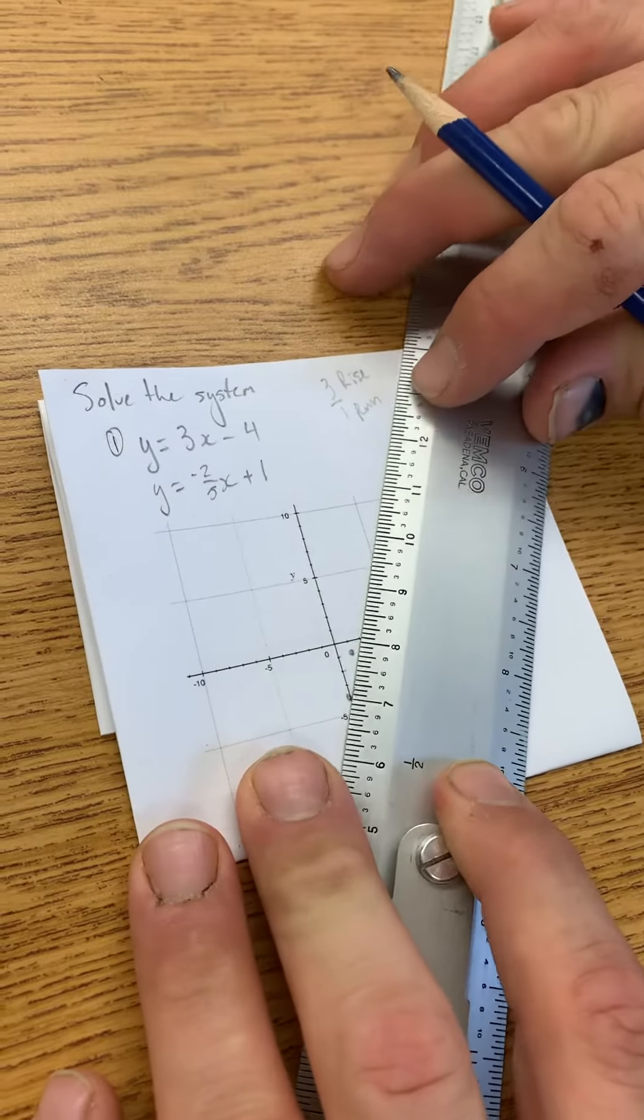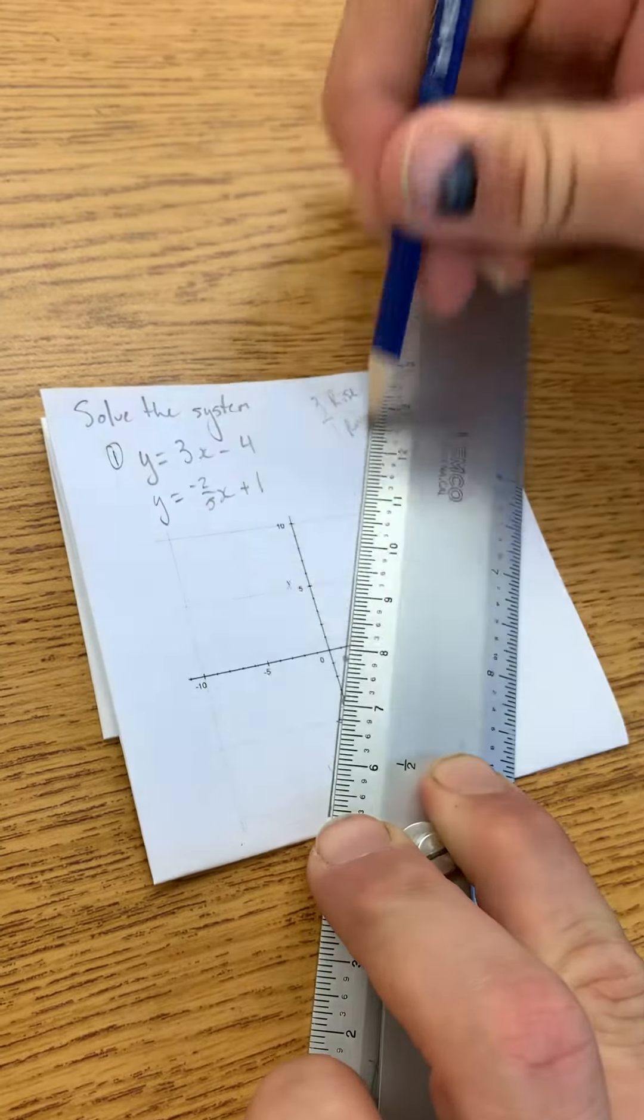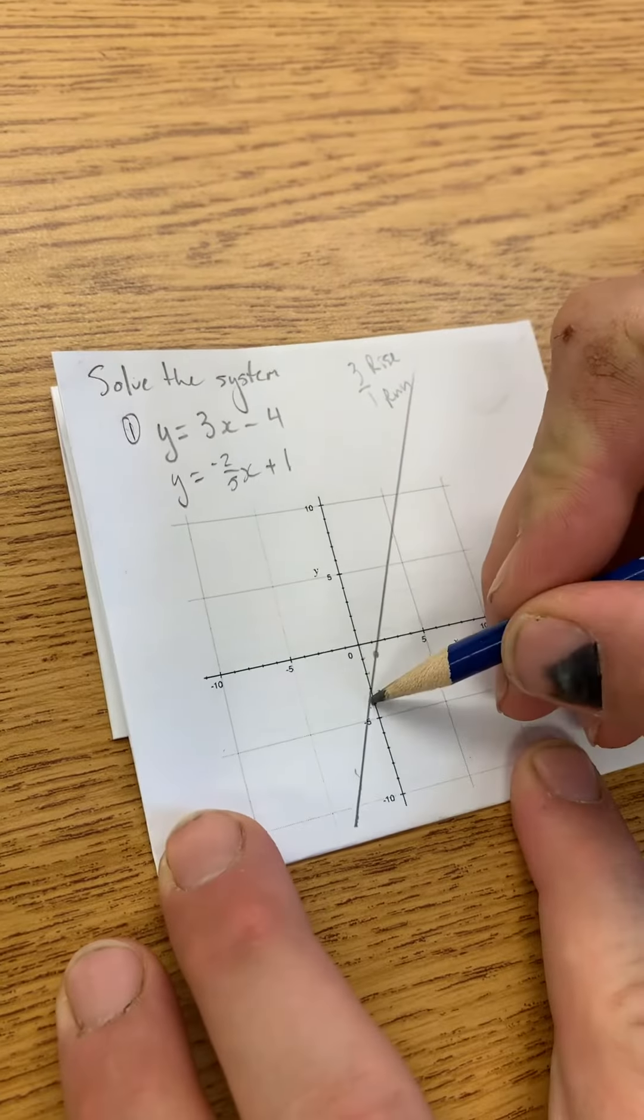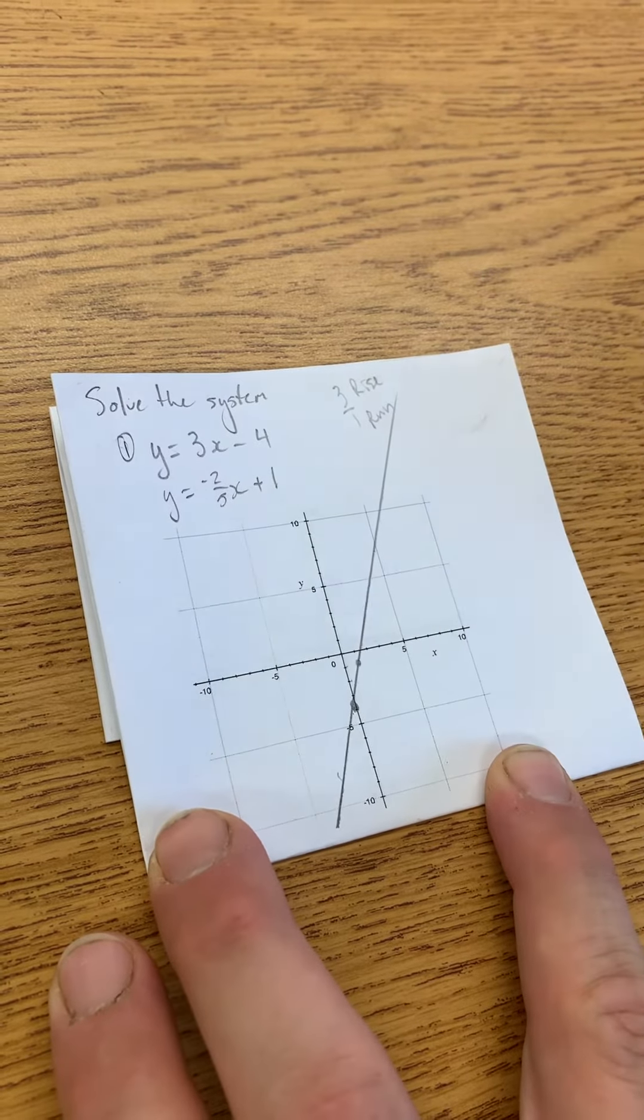I'll grab my ruler and connect the dots. Hopefully I can do this neatly. That's not bad. Let's make that dot a little bit bigger so it looks closer.